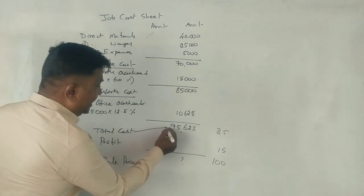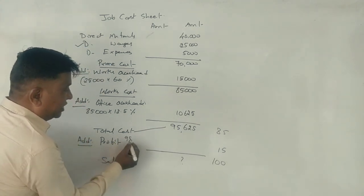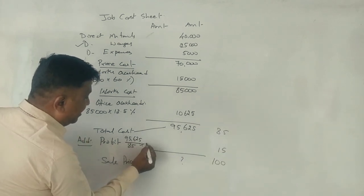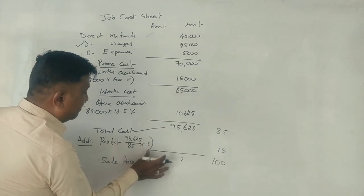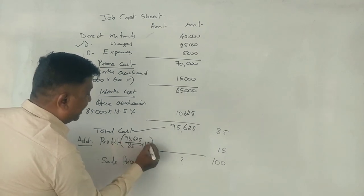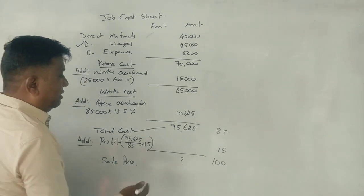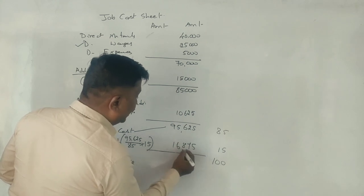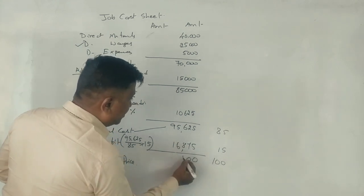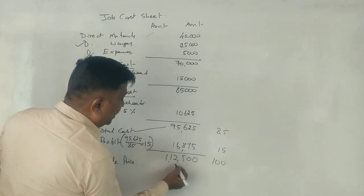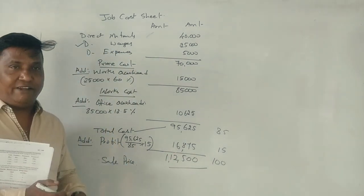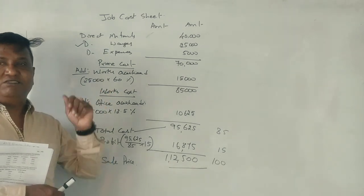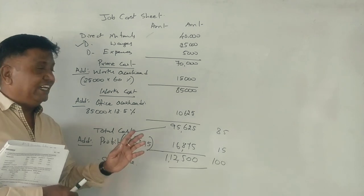95,625. How much profit is? 15 profit is here. The selling price is 112,500. This is how this problem has to be solved.